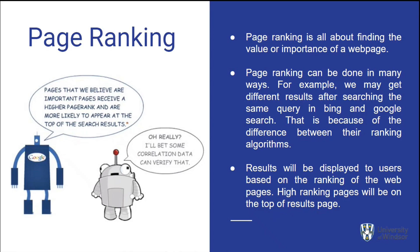Hello professor. Let me explain page ranking. Page ranking is about finding the value or importance of a web page. Different search engines like Bing and Google use their own page ranking techniques, which is why we get different results when searching the same query. In our project, we rank pages based on the number of occurrences of the input keyword in the pages, and pages are displayed according to rank — higher-ranking pages are displayed before lower-ranking pages.